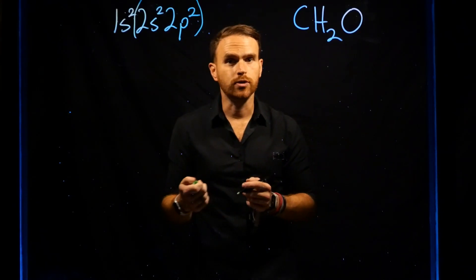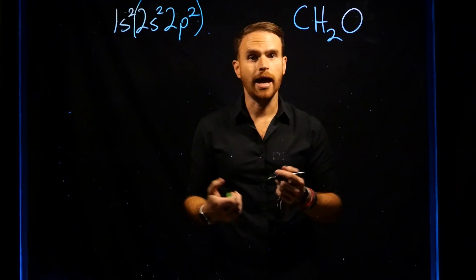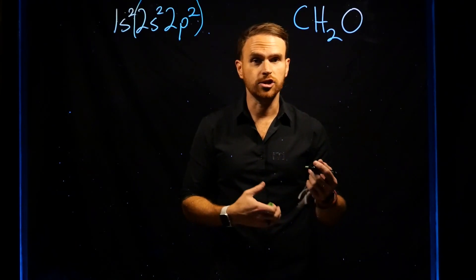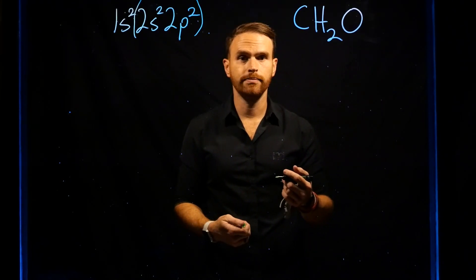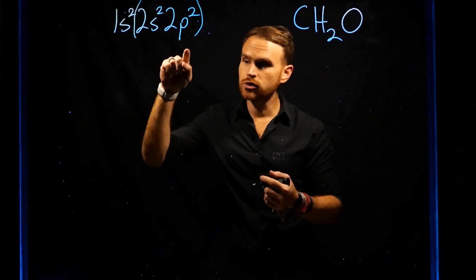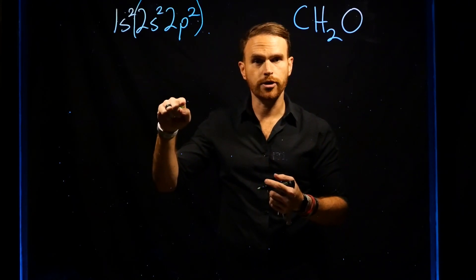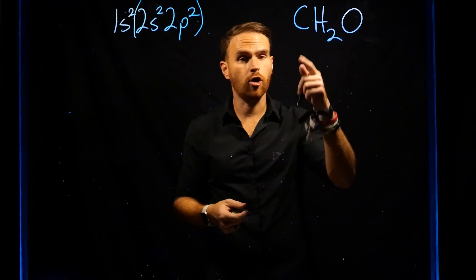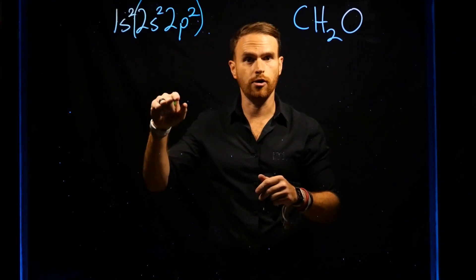Another way to quickly determine how many valence electrons there are for each individual atom is to go to the row on the periodic table where you find each atom. For carbon, it's the second row.